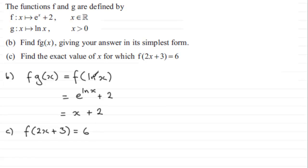So just like we did up here where we replaced the x with natural log of x, we now replace the x in f of x with 2x plus 3. So we therefore have e to the power 2x plus 3, and then we've got the plus 2, and we're told that this equals 6.